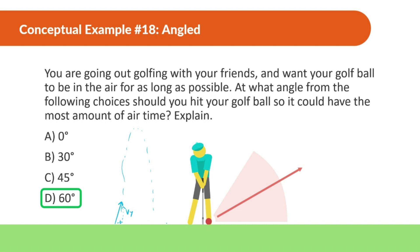The more velocity in the y direction, the higher it's going to go up, and the higher it goes, the longer it will be in the air. For example, if we shot it really far but most of it's in the x direction, it's just going to hit the ground pretty quickly because there's not much velocity in the y direction. So 60 degrees is the correct answer, but only because it's the highest angle given — the truth is 90 degrees, hitting it straight up, would give you the greatest amount of airtime.